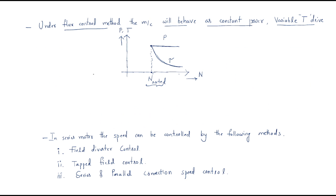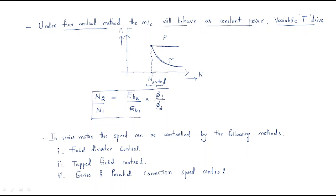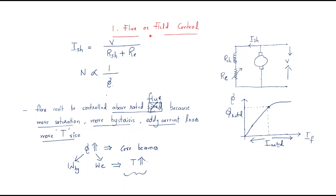We can also derive a speed ratio relation: N2/N1 = (Eb2/φ2) / (Eb1/φ1), which gives the relation between two speeds N1 and N2. This is how speed is controlled by varying the field flux. The most important point is that field flux control is only effective above rated speed values. I hope all of you understood this session — thank you.